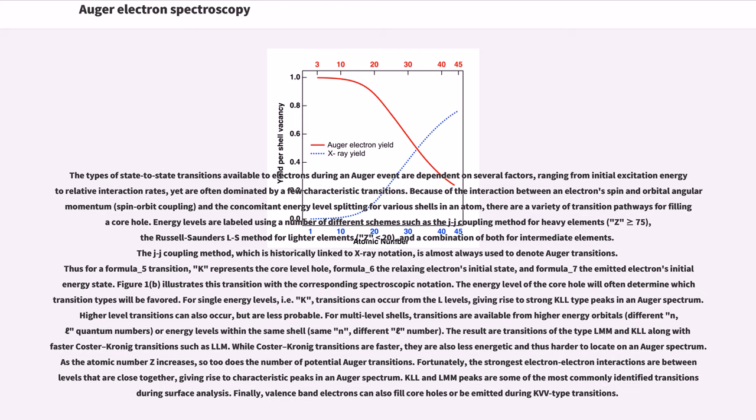Thus for a K-L₂L₃ transition, K represents the core level hole, L₂ the relaxing electron's initial state, and L₃ the emitted electron's initial energy state. Figure 1b illustrates this transition with the corresponding spectroscopic notation. The energy level of the core hole will often determine which transition types will be favored.